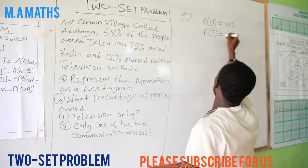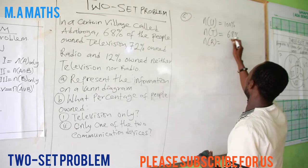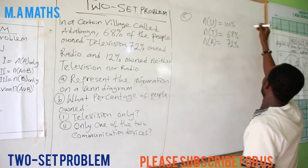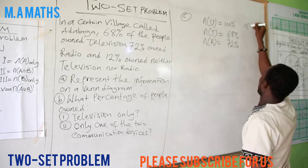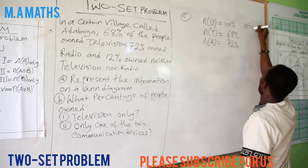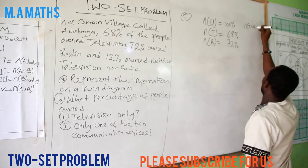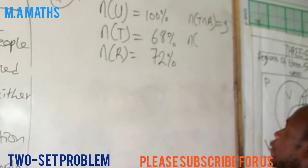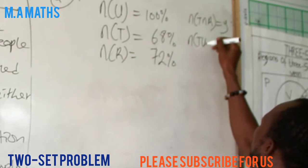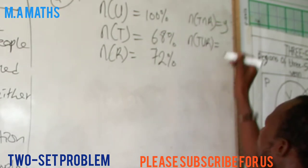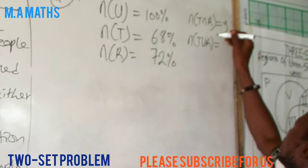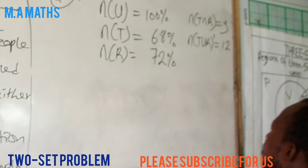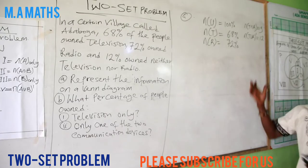We have T represents those who own television. n(T) will give us 68 percent. And we have n(T intersection R)—let's represent it y. n(T intersection R prime) will give us 12. So this is the information we need to draw our Venn diagram.